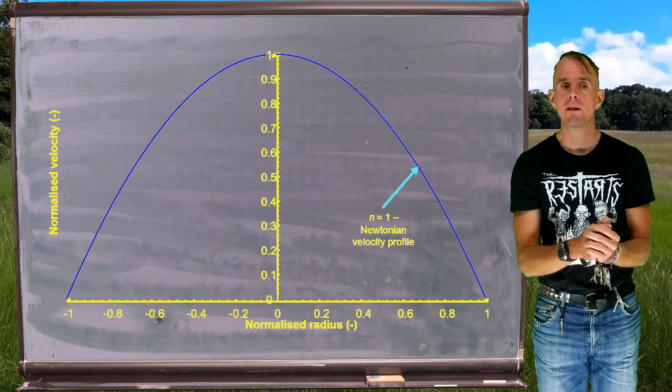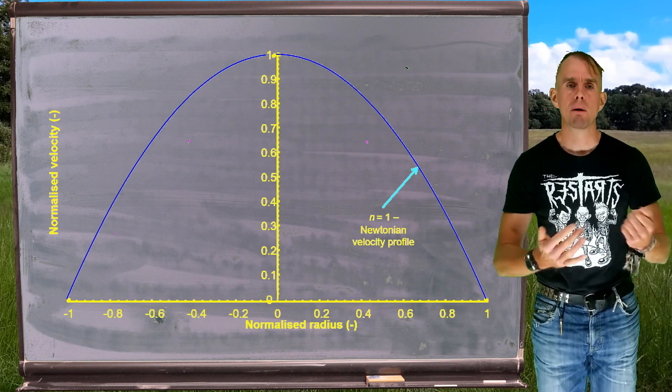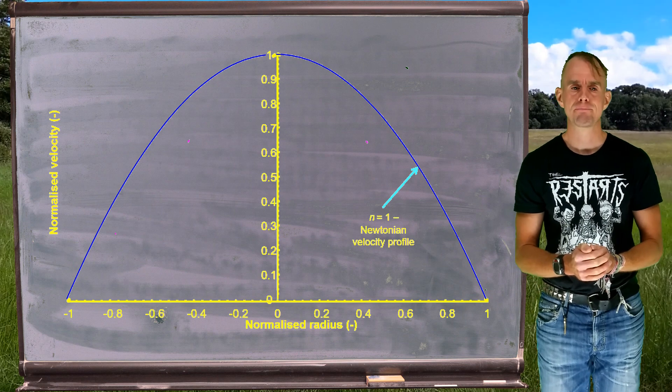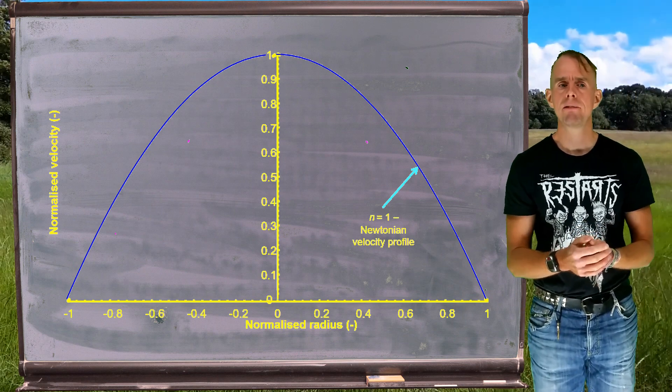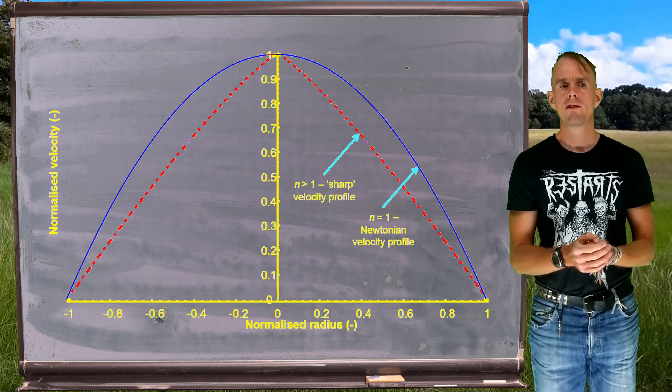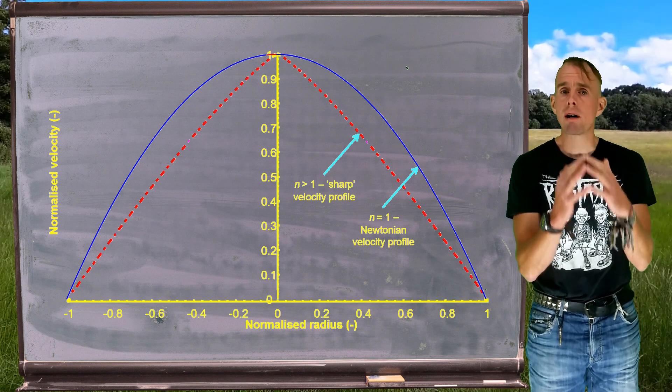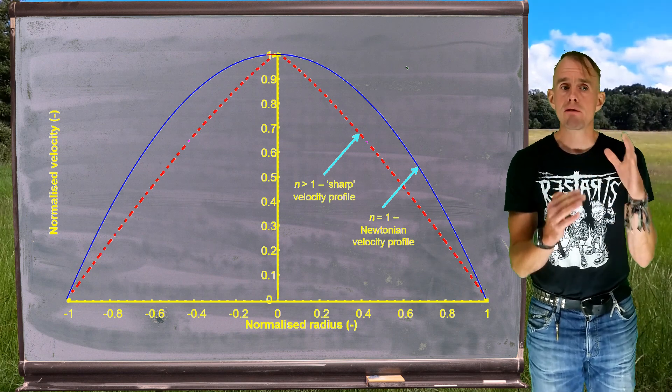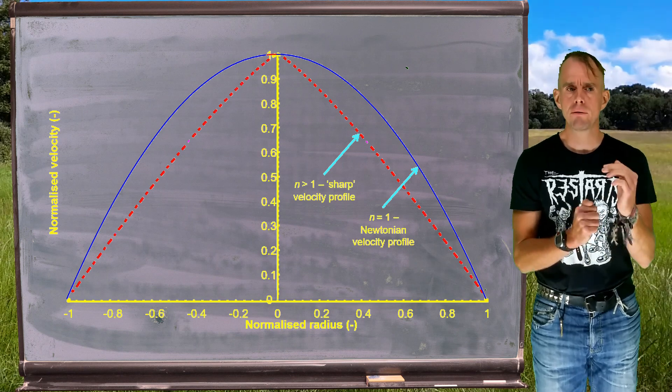The curve that's on there at the moment is for setting n equals to 1, which is my familiar parabolic flow for Newtonian fluid. So if n is greater than 1, this is our dilatant fluid or our shear thickening fluid, we can see that we have a far sharper profile, almost triangular in shape.